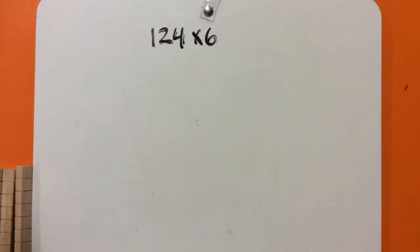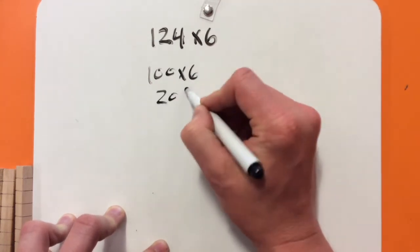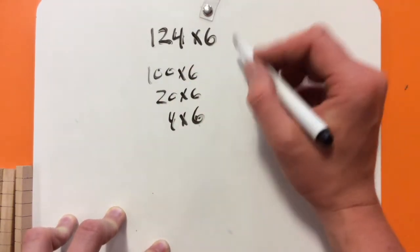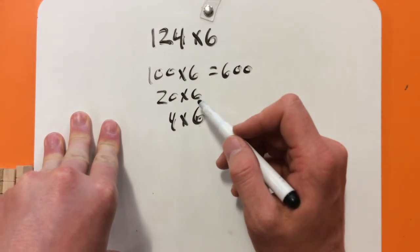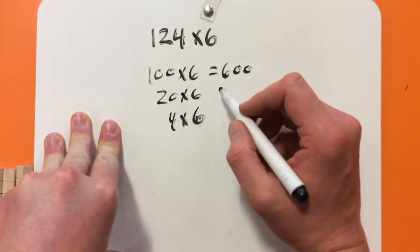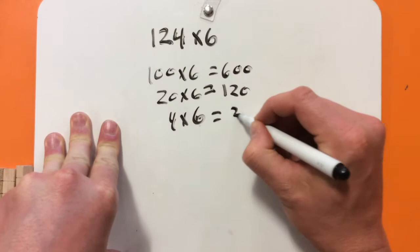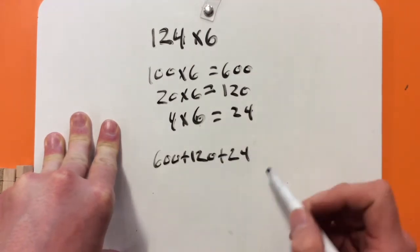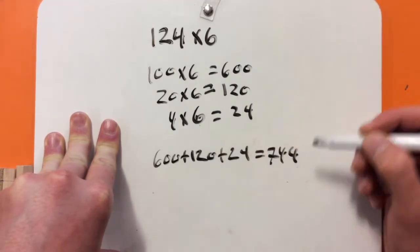This method can be expanded to even bigger numbers. For example, 124 times 6. I can break that down to 100 times 6, and 20 times 6, and 4 times 6. 100 times 6 — we know 1 times 6 is 6, so 100 times 6 equals 600. 20 times 6 equals 120. So we just need to add up 600 plus 120 plus 24, and we know that will be 4 ones, 4 tens, and 7 hundreds — giving us 744.